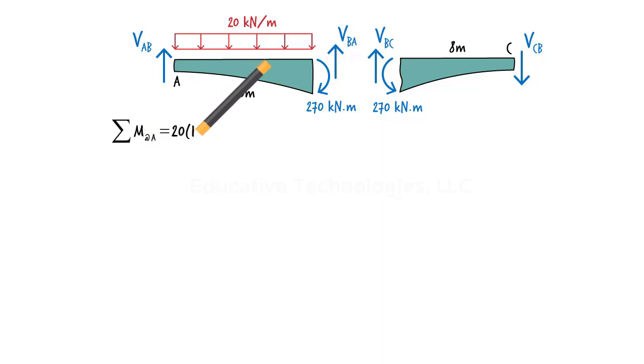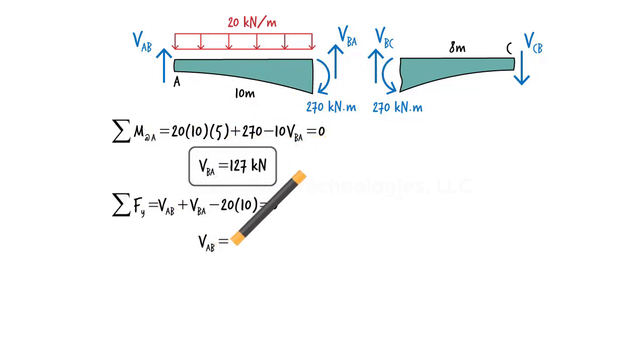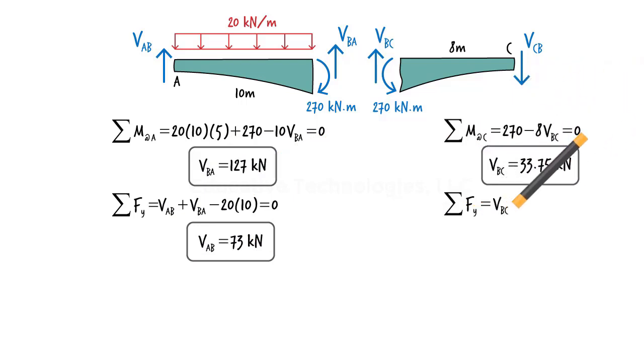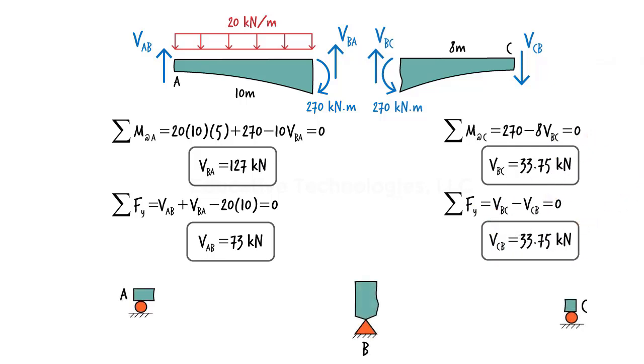For segment AB, we can write the equilibrium equations as shown. And for BC, the equations and the shear forces are displayed here. Placing the computed shear forces at joints A, B, and C, we get the results shown.